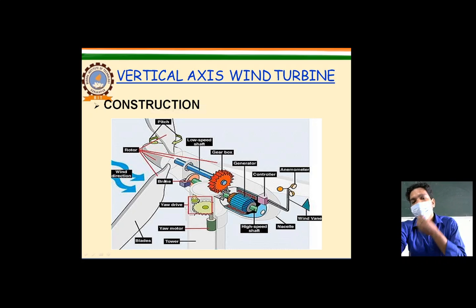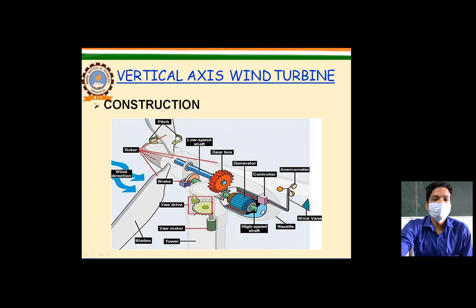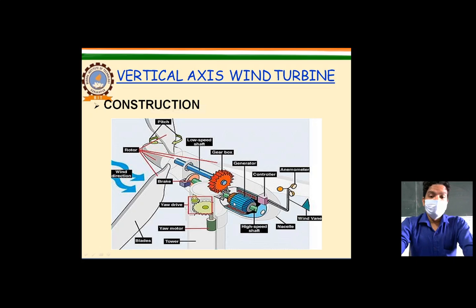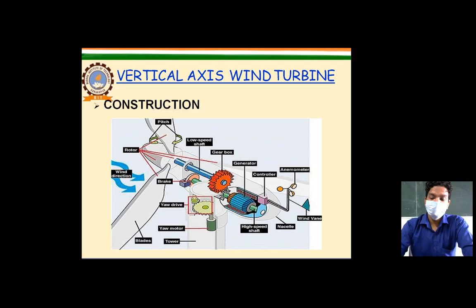In the working of the wind turbine: initially, wind strikes on the blade. When the wind strikes the blade, the low-speed shaft rotates because the blades are mounted on the shaft. The motion is transmitted through the gearbox to the generator. When the generator receives mechanical energy, it converts that mechanical energy into electricity, fulfilling the motive of electricity generation. It should be noted that the horizontal axis wind turbine is most suitable for electricity generation.